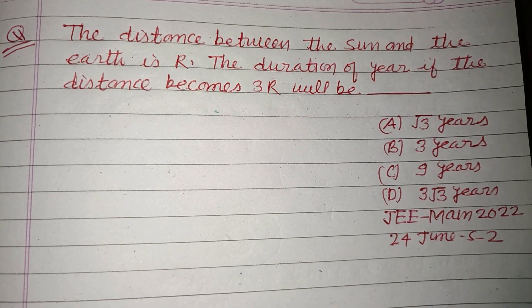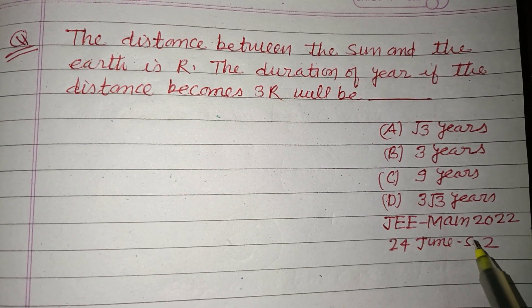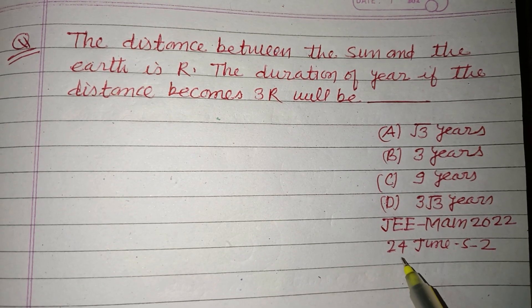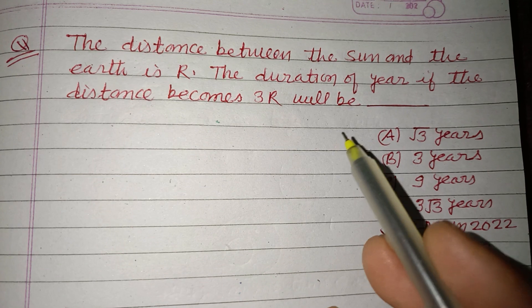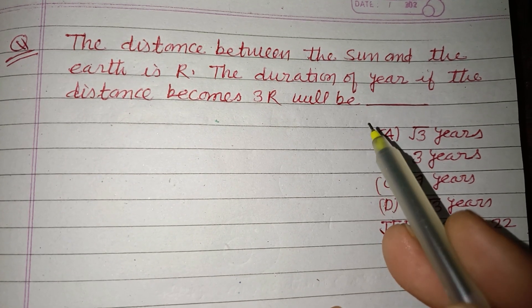Hello viewers, welcome to this YouTube channel. This is a question from JEE Main 2022, 24 June second shift. The distance between the Sun and the Earth is R. The duration of year if the distance becomes 3R will be: